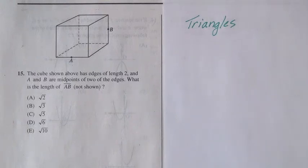Question 15 reads, the cube shown above has edges of length 2, and A and B are the midpoints of two of the edges. What is the length of the line segment AB?